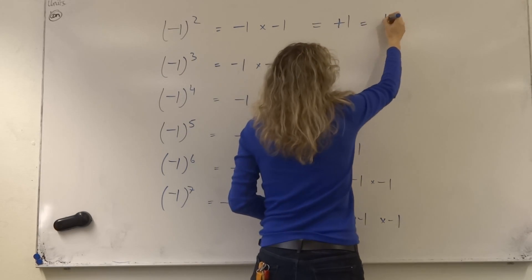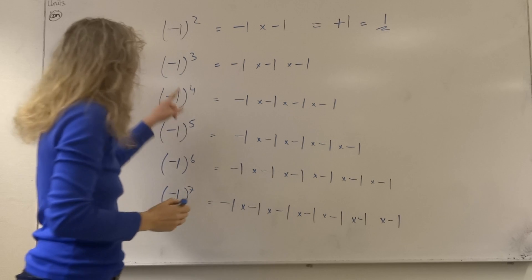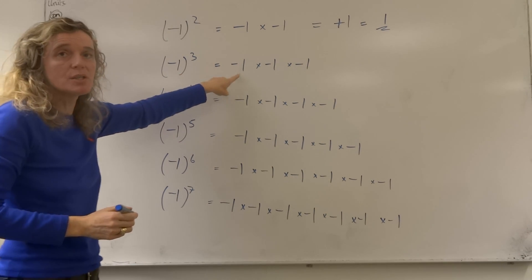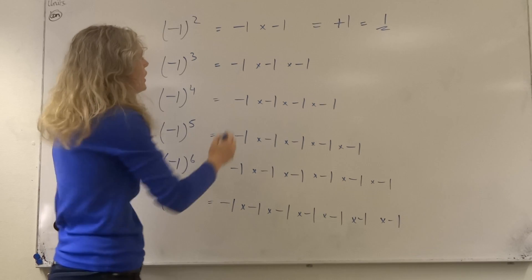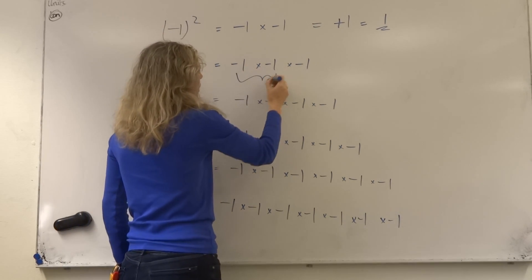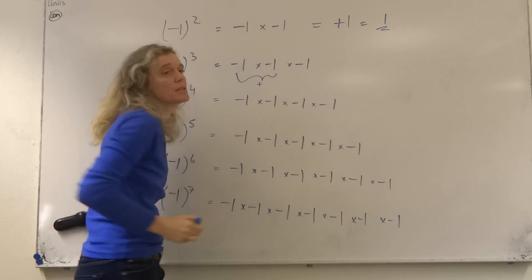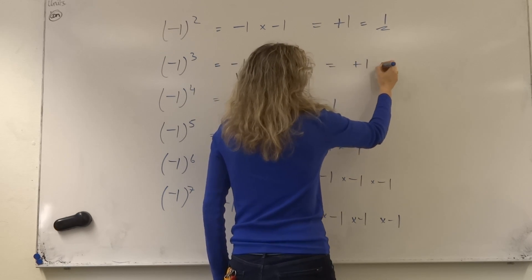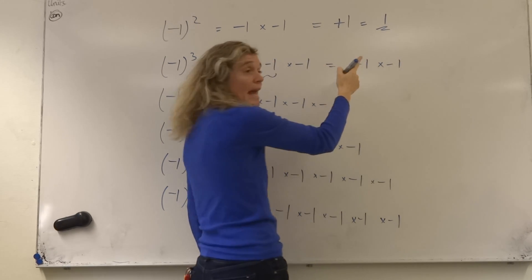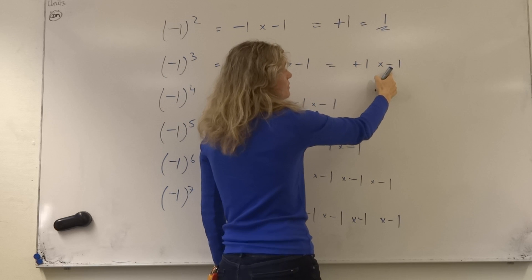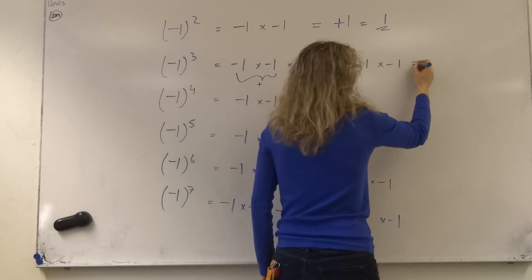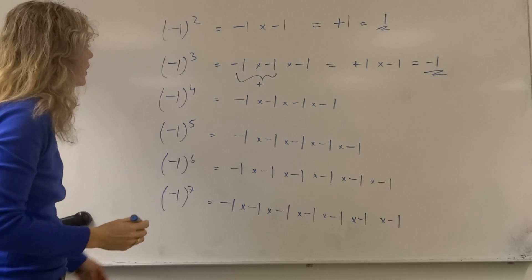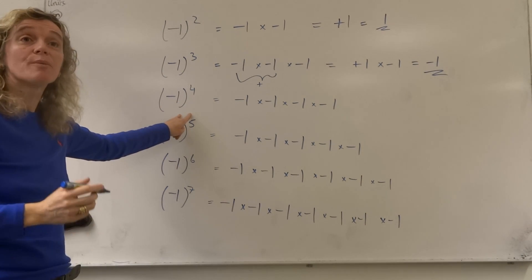What about minus one cubed? That means minus one times minus one times minus one. We know that minus one times minus one gives us a plus, so what we're actually going to get is plus one multiplied by minus one. Now we have a plus times a minus, which is going to give us minus one as our answer.